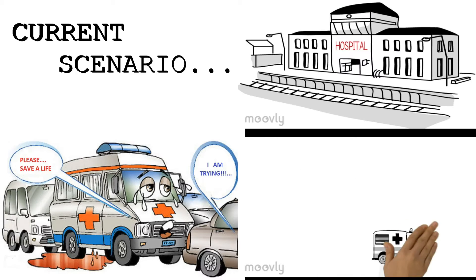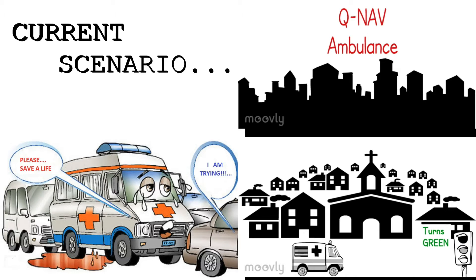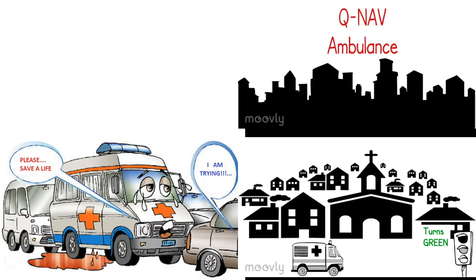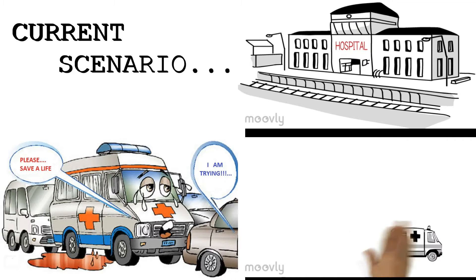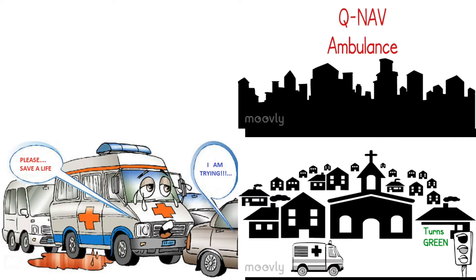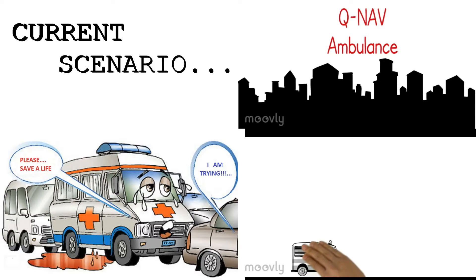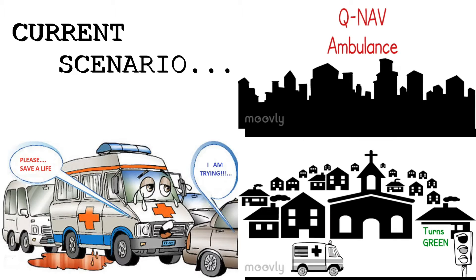The second part, that is the server, has all the details about the coordinates of the location of the traffic junctions in the way of the ambulance. The difference between the location of the ambulance and the traffic junction is calculated. When it is approximately 300 meters, the data is transmitted to the traffic junction. At the traffic junction, a microcontroller receives the data using a GPRS module and changes the traffic signal. This is how our QNave ambulance works.